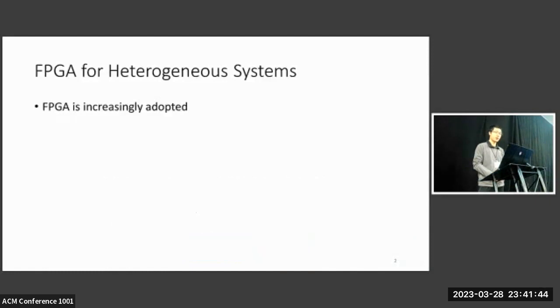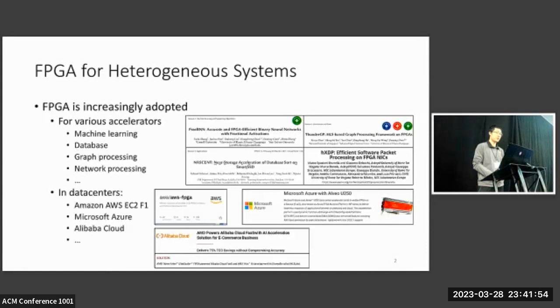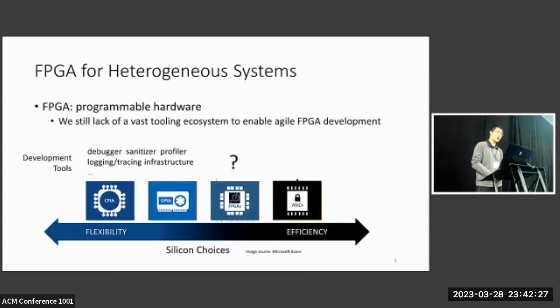FPGA is increasingly adopted in heterogeneous systems. It has been used for various accelerators, such as machine learning, database, graph, and network processing. It has also been widely deployed in data centers, such as Amazon and Microsoft, where customers can run FPGAs from cloud services. FPGA is popular because it possesses a unique position in the flexibility and efficiency spectrum of silicon choices. FPGA is essentially programmable hardware that enables rapid prototyping and faster development iterations. However, we find that even though software developers have access to a long list of helpful tools, we still lack a vast tooling ecosystem to enable agile FPGA development.